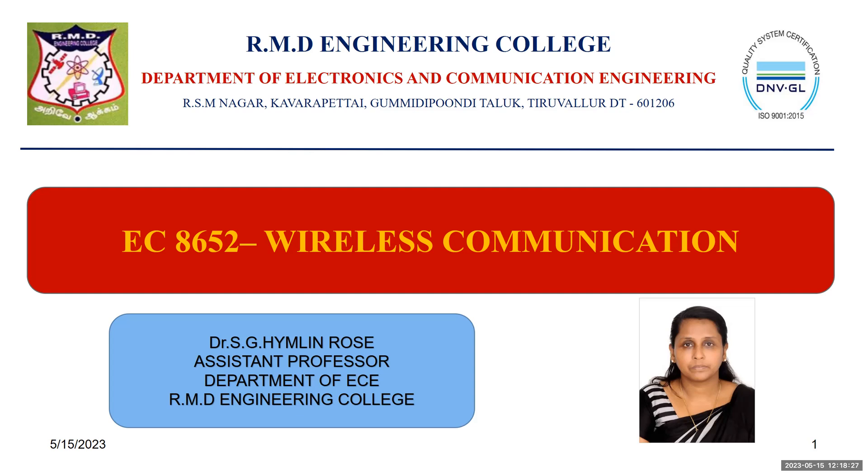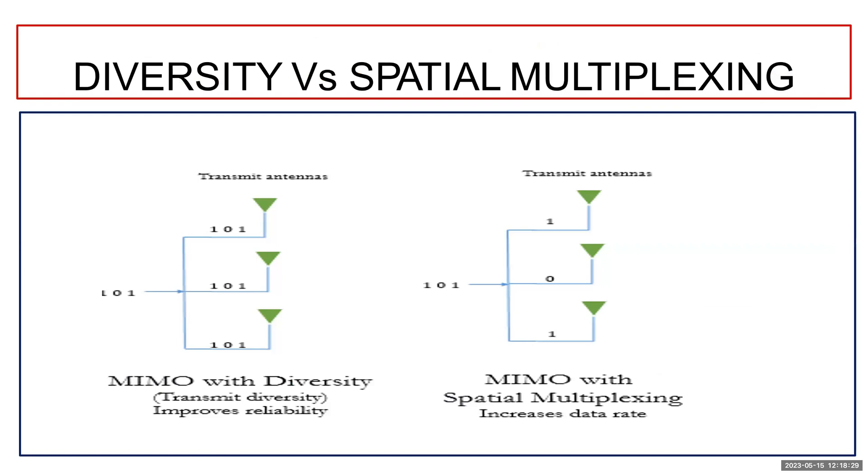First and foremost, what is the difference between spatial multiplexing and spatial diversity? First is MIMO with diversity. In spatial multiplexing, it's a technique in MIMO that boosts data rate by sending the data payload in different or separate streams through spatially separated antennas.